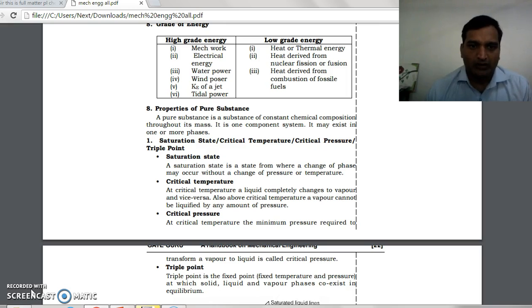Now we will see one by one: saturation state, critical temperature, critical pressure, and triple point. A saturation state is a state from where a change of phase may occur without a change of pressure or temperature.